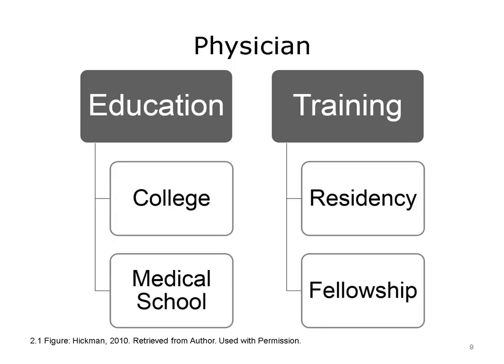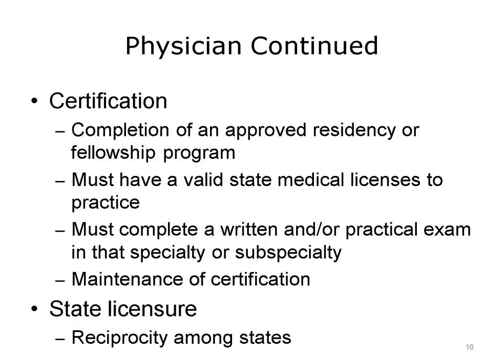Education for a physician typically includes four years of college and four years of medical school. Medical school can be either allopathic, for medical doctor, or osteopathic, doctor of osteopathy. After medical school, physicians typically pursue three to five years of training in a specialty. Fellowship training provides an additional one to three years of study to gain expertise in a subspecialty. Physician specialty certification requires successful completion of an approved residency or fellowship program, a valid license to practice medicine, and completion of a written and/or practical exam that varies by specialty and subspecialty.